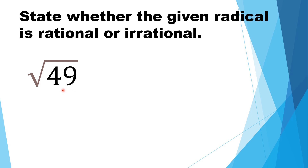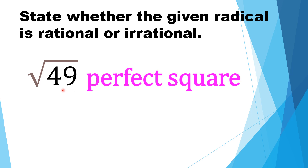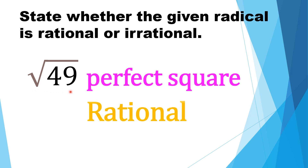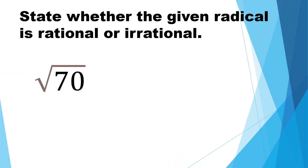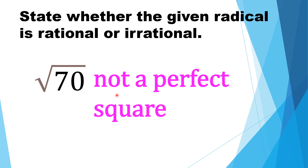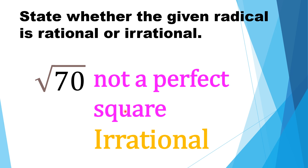Square root of 49: 49 is a perfect square. Thus, square root of 49 is rational. Square root of 70: 70 is not a perfect square. Thus, square root of 70 is irrational.